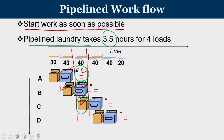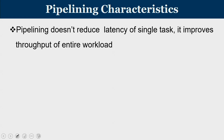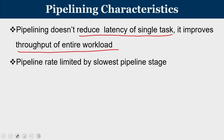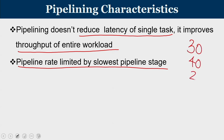The entire pipelined laundry takes only 3.5 hours to complete the same task. Pipelining does not reduce the latency of a single task, but the throughput — the number of tasks completed — is significantly improved. The pipeline rate is limited by the slowest pipeline stage. In the laundry example, the slowest is the dryer at 40 minutes, so new work can only be initiated at 40-minute intervals.